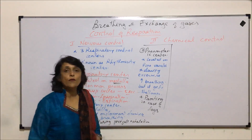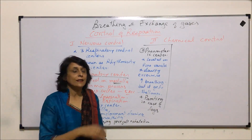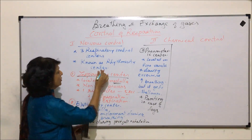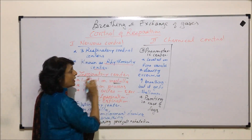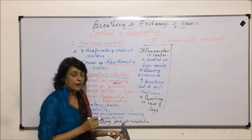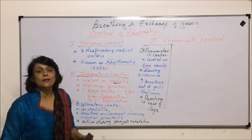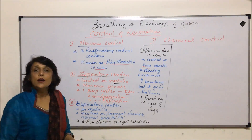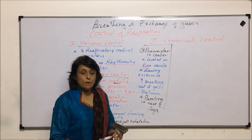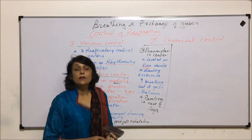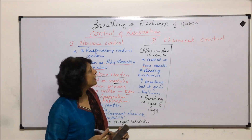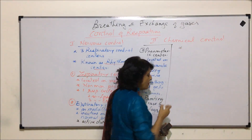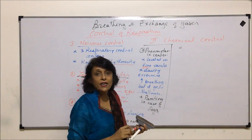So this shallower, faster breathing is under the control of the pneumotaxic center. All three centers — two on the medulla and one on the pons — are associated with the central nervous system, and that is why this is called nervous control. Now, coming to the next control, that is chemical control, which is controlled by some chemosensitive bodies.